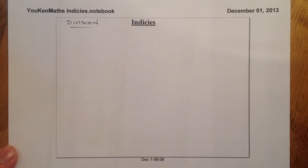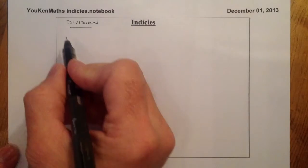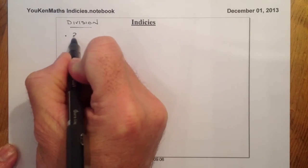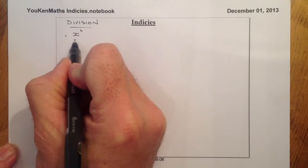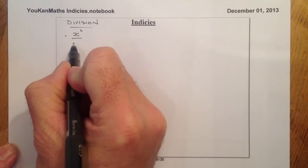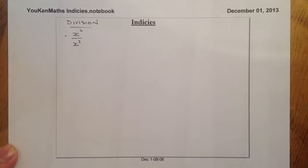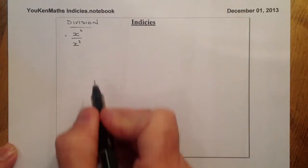Today we're looking at indices — specifically division. We've already looked at multiplication, so let's go ahead and look at this one. The first example I'm going to look at is x to the power of 6 divided by x to the power of 2.